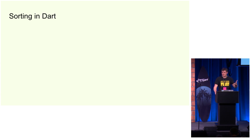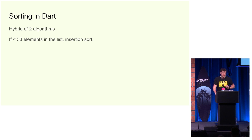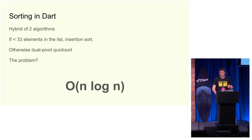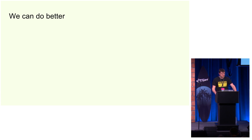So sorting in Dart — some smart people did the work for us, and it's a hybrid of two algorithms. If you have less than 33 elements in your list — and someone did math to figure this out — then it uses an insertion sort to be more optimal. Otherwise, it uses what's called a dual pivot quick sort, which I didn't actually know was a thing until I did this talk. Problem is, all of these best cases are O(N log N), which just isn't quite fast enough, because we can do better. We can make it O(N), because Dart is the future.